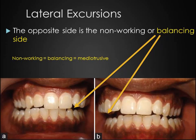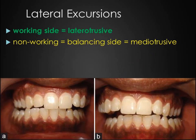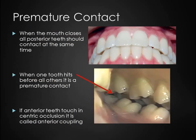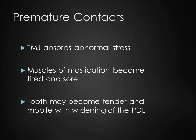Non-working cusps should not contact in a natural dentition. When they do, it is referred to as a non-working interference, and these interferences can be harmful to the joint. When the mouth closes, all posterior teeth should contact at the same time. When one tooth hits before all others, it is a premature contact. If anterior teeth touch in centric occlusion, it is called anterior coupling. Where premature contacts exist, the TMJ absorbs abnormal stress, the muscles of mastication become tired and sore, and the tooth may become tender and mobile with widening of the PDL.